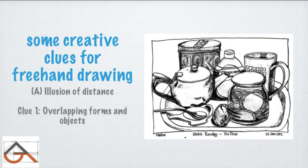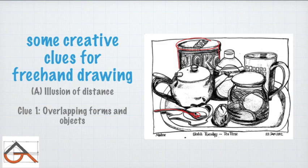Some creative clues for freehand drawing: always use the illusion of distance. The best technique to show depth is overlapping forms and objects. For example, in a picture where a tin box overlaps a spoon, it is very easy to see which is in front. Always use overlapping forms and objects in your drawing — it creates depth.